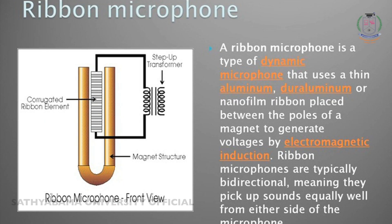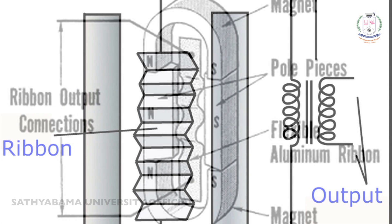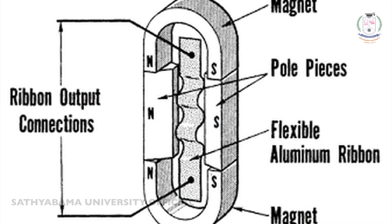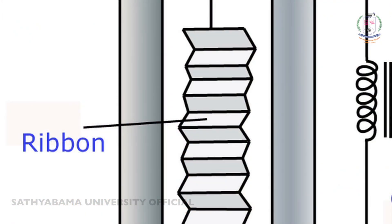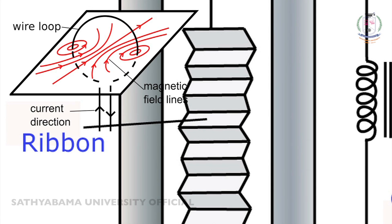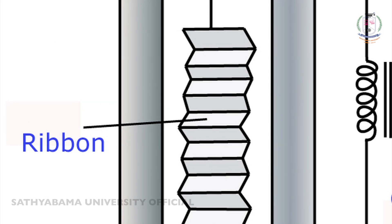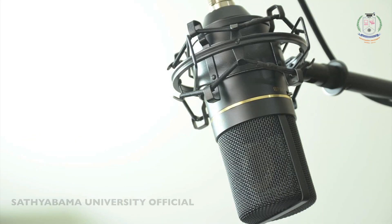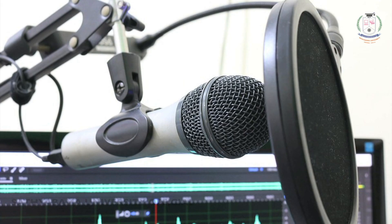Now let us look at the function of the ribbon microphone. First, the sound wave strikes on the ribbon. Here, the ribbon acts like a diaphragm. As the ribbon vibrates within its magnetic field, it generates a voltage that corresponds to the change in velocity. In classic ribbon designs, this level is very low compared to typical dynamic microphones.